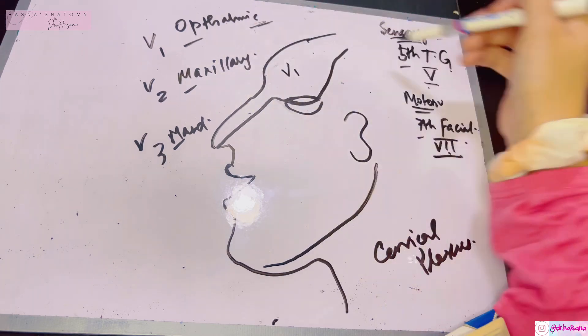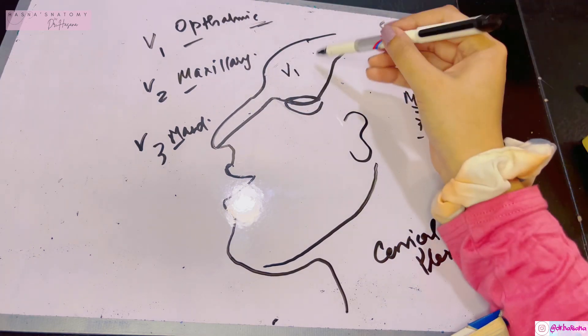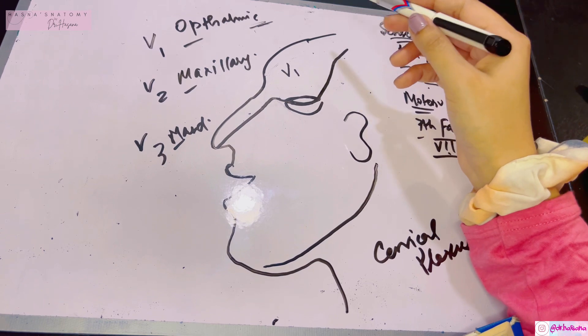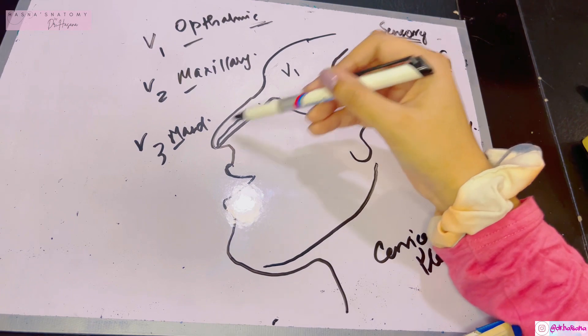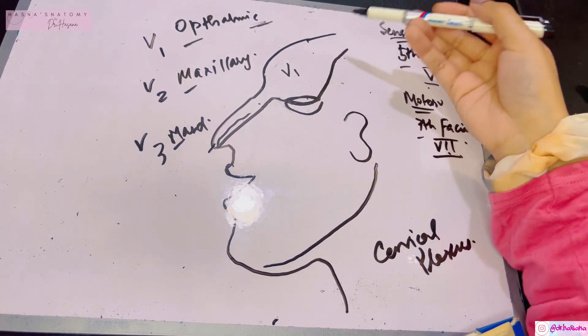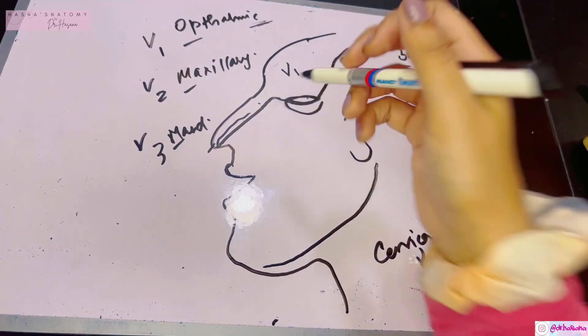Once you've drawn that racket, this is the supply of V1 of the trigeminal nerve. What's coming in this supply? The upper eyelid, the forehead, the nose dorsum, and the tip of the nose. Just describe what you're seeing.